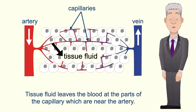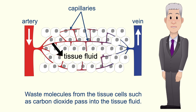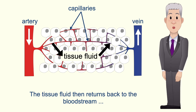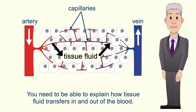Tissue fluid leaves the blood at the parts of the capillary which are near the artery. Tissue fluid transfers molecules such as oxygen and glucose to the tissue cells. Waste molecules from the tissue cells, such as carbon dioxide, pass into the tissue fluid. The tissue fluid then returns back to the bloodstream at the parts of the capillary which are near the vein.